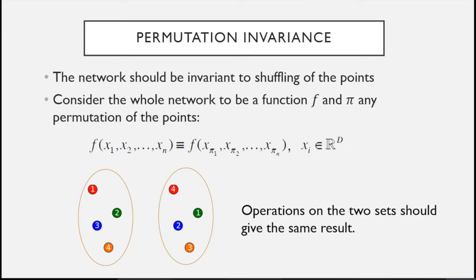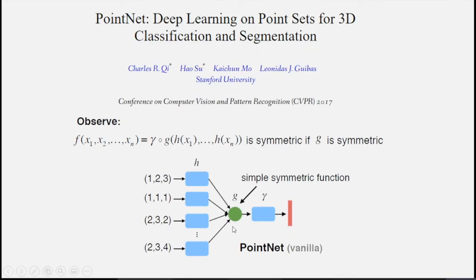Permutation invariance states that the network should be invariant to shuffling of the input point cloud. So if we have a network defined as a function f, and pi is any permutation of the points, the network function should give the same result. For example, if we shuffle the ordering of these two sets of points, the network should give us the same result.